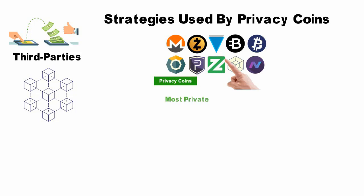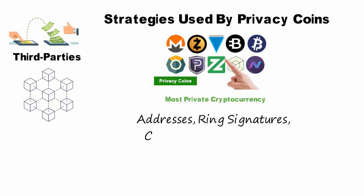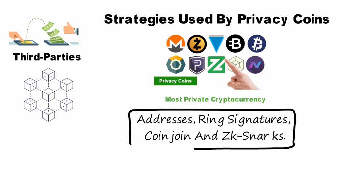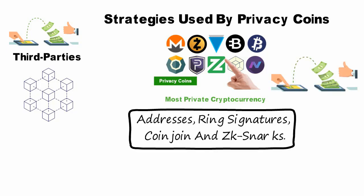Privacy coins employ a variety of different strategies to become the most private cryptocurrency. The most popular of which include stealth addresses, ring signatures, coin join, and zk-SNARKs. Stealth addresses require a sender to generate a new address for every transaction sent in order to avoid being linked to a receiver.